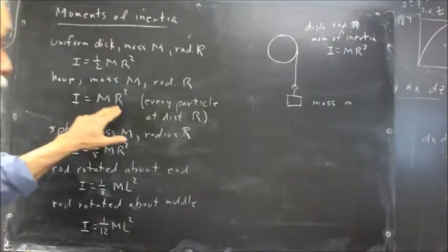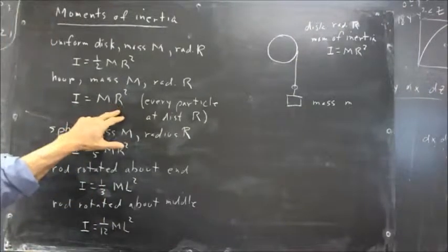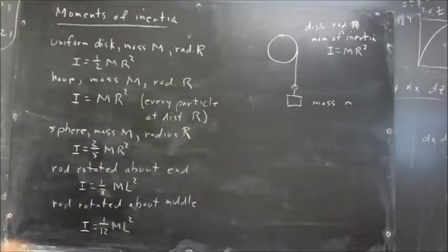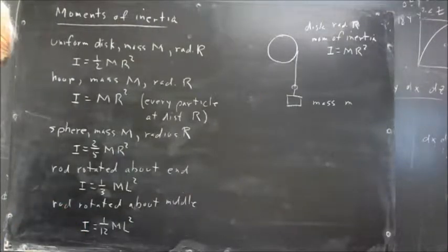All the hoop is at radius, is at distance R from the center, so that the moment of inertia is big M R squared. And you should remember that the moment of inertia is obtained by adding up all the little m r squareds.